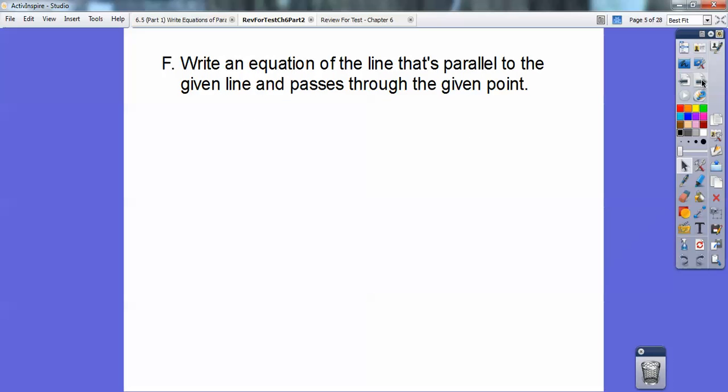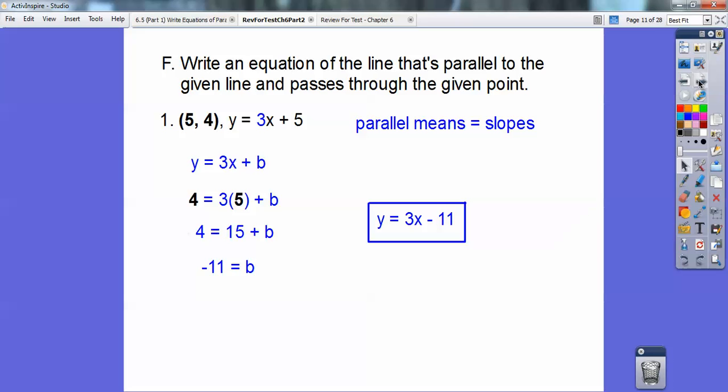Write an equation of the line that's parallel to the given line that passes through the given point. Here's number 1. It's parallel to this line right here. So I'm just concerned about this slope right here, this 3. This 5, I could care less about. I just want this slope right out of this line. It says it's parallel. Remember, parallel lines have equal slopes. So my equation is going to be y equals 3x plus b. I just got to figure out b. You guys know what to do. You're going to substitute that point in there, and then you get negative 11. So it's going to be y equals 3x minus 11.